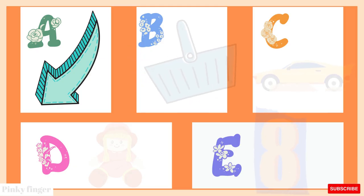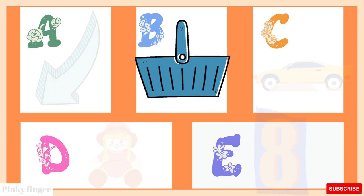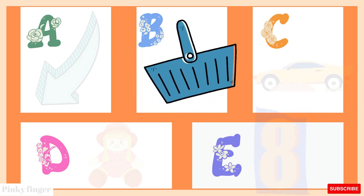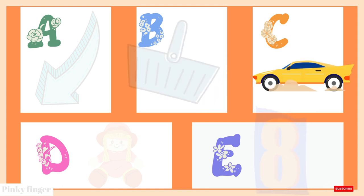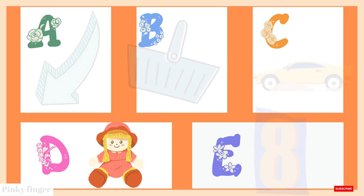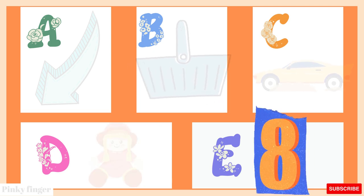A is for Arrow. Arrow. B is for Basket. Basket. C is for Cart. Cart. D is for Dahl. Dahl. E is for Egg. Egg.